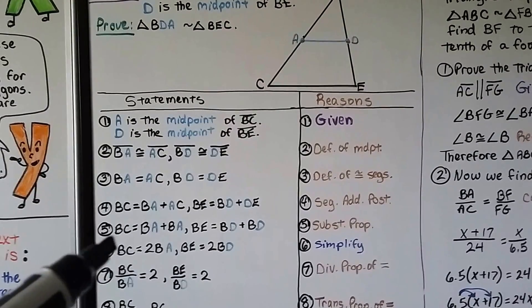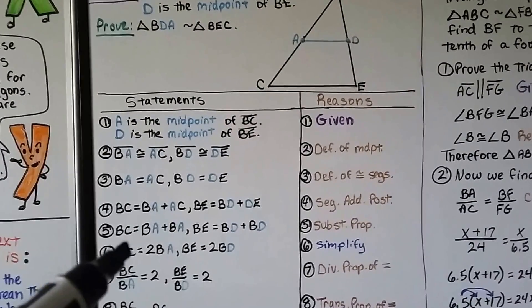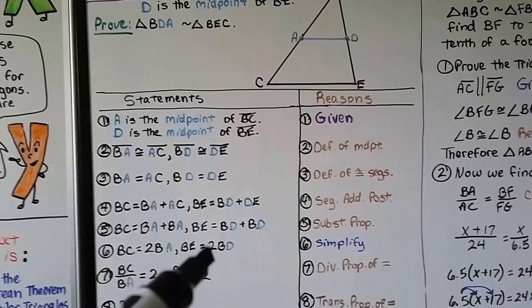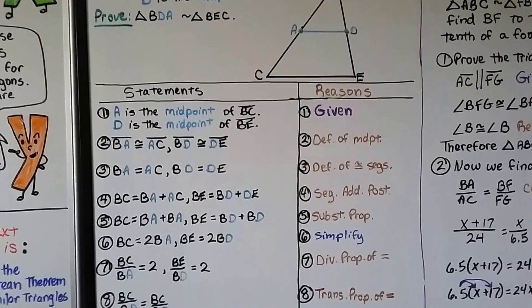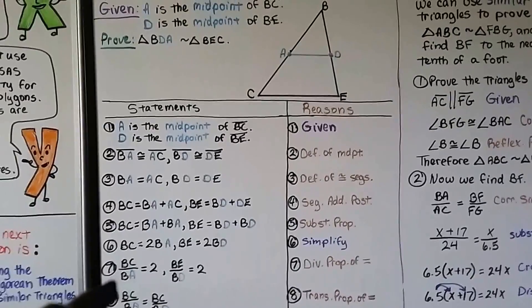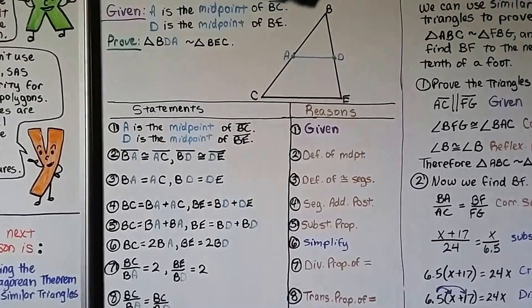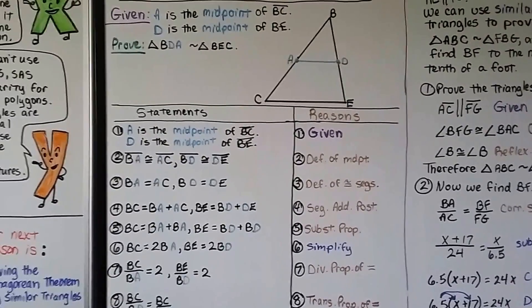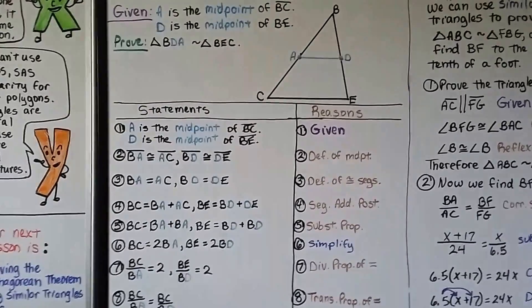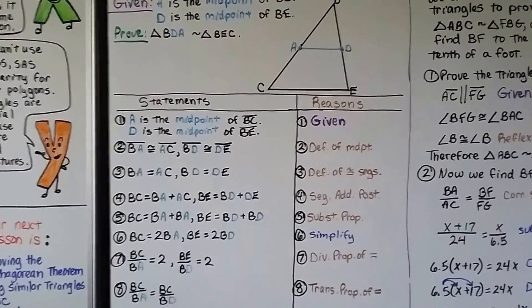That brings us to number six. If we're adding two of them together, we can say BC is equal to 2BA, and BE is equal to 2BD. Then we can say BC over BA is equal to 2, and BE over BD is equal to 2. That's the division property of equality.